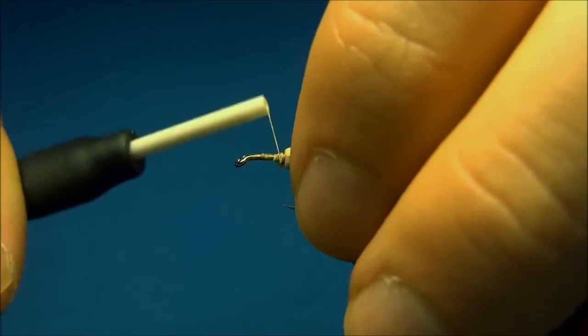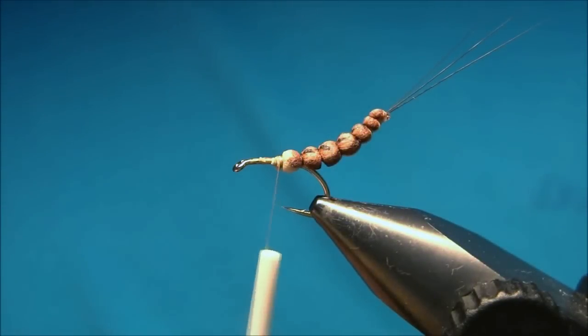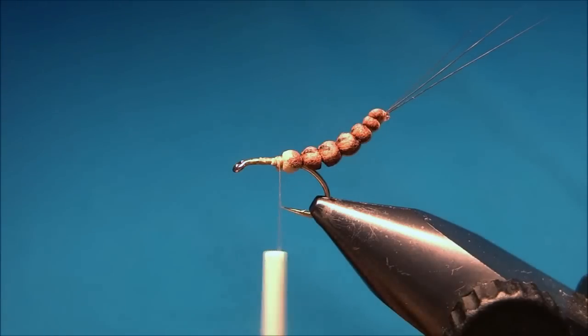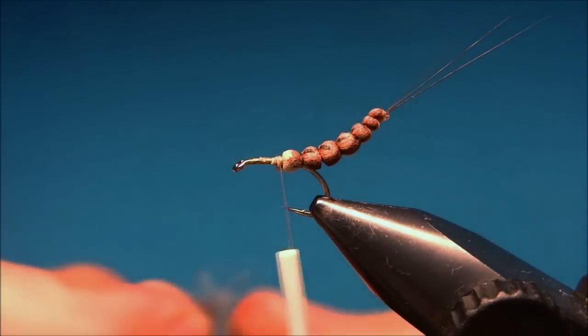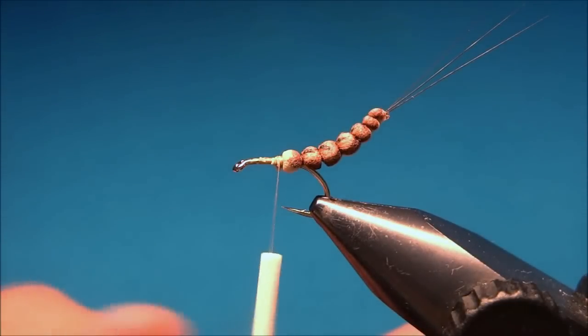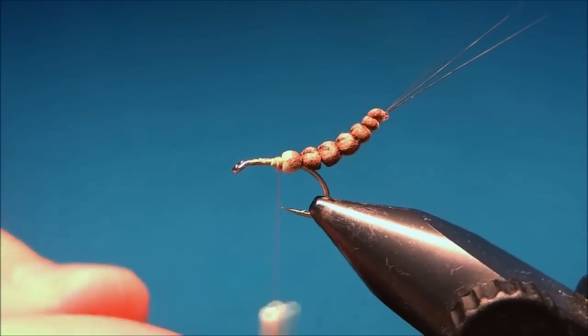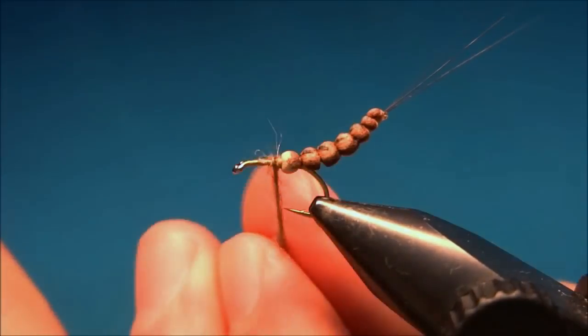Now for the thorax I'll use a mix between dark brown and tan dubbing. And this dubbing is the Life Cycle dubbing from Wapsi. It's a really good dubbing. It's a mix between synthetic and natural so it has this little sparkle to it and some longer hairs to represent legs.